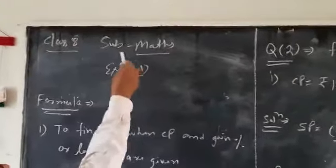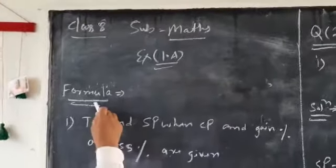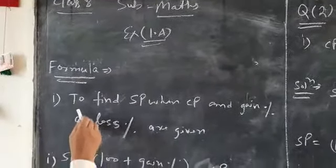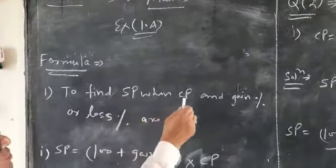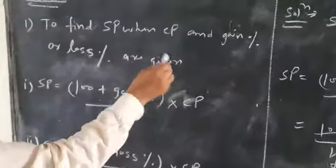Class as subject match. Exercise 10A. Formula. First formula to find SP when CP and gain percent or loss percent are given.